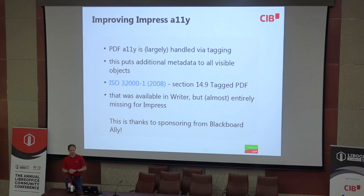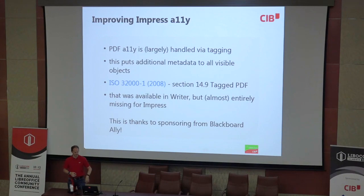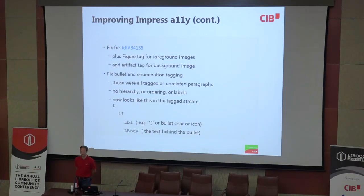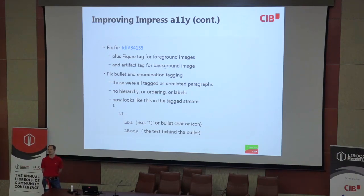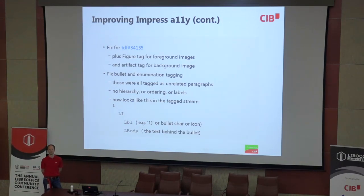That work is sponsored by Blackboard. Thanks for that — it wouldn't have been possible without them. There's a very old bug, 34135, where for Impress the problem is that images do not get any description. You can set the description on an image in the UI, but it just doesn't get exported to PDF. It's useful for the screen reader in LibreOffice on your desktop, but it's just not being passed down to PDF. That was also working for Writer, just not for Impress.